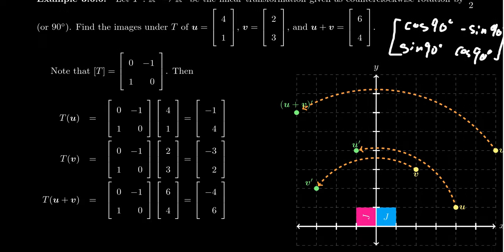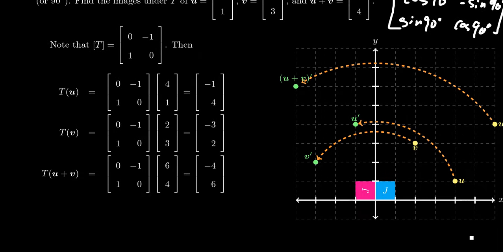So what does this matrix do to them? In terms of multiplication, it's pretty easy to see. If I take [0, -1; 1, 0] and times it by (4,1), you're going to get (-1, 4). The calculation is pretty easy. If you take vector v and times it by your rotation matrix, you're going to get (-3, 2). If you want to do the vector (6,4), you multiply the matrix by (6,4) and you'll get (-4, 6).